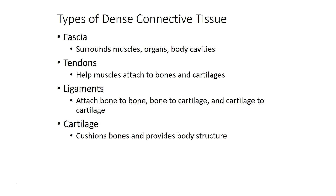We have a variety of types of dense connective tissue that are going to be important to us. One type is fascia, which is a skin-like wrap around muscles, organs, and various body cavities. We also have tendons and ligaments that connect pieces of the body to each other. Tendons connect muscles to bones and cartilages; ligaments connect bones and cartilages to each other.